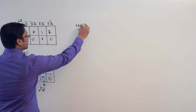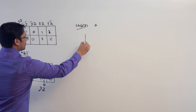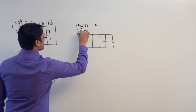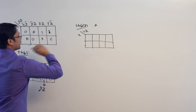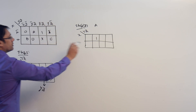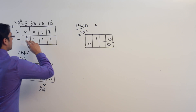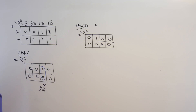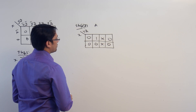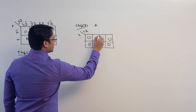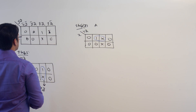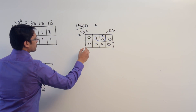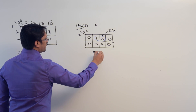We are doing step two for variable a. Keep the variable a as one, keep all the other variables as zero — so here we have zero, zero, zero — and keep the ones as don't care. Now get an SOP expression. You can make a subcube, and this subcube is denoting x complement, z. Therefore, the SOP expression for step two is a dot x complement, z.